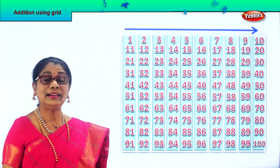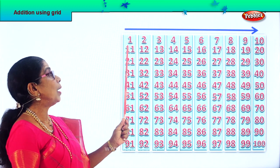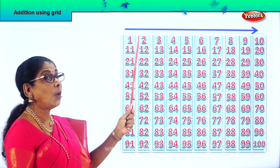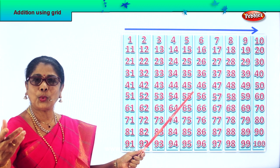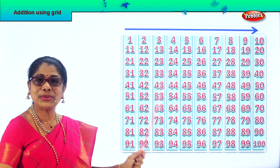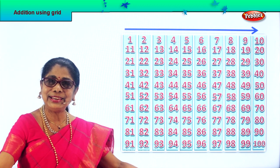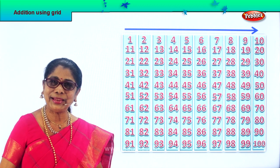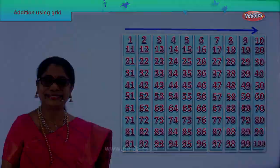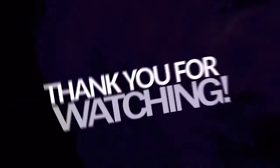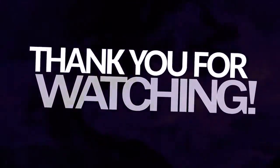So you learned to add ones — add one more at a time — using the grid. Did you enjoy? Good.